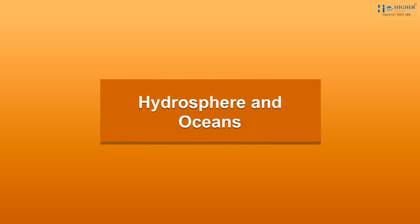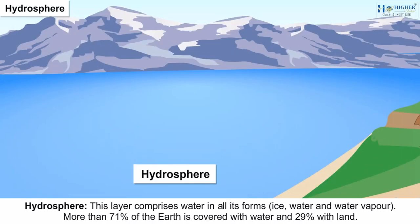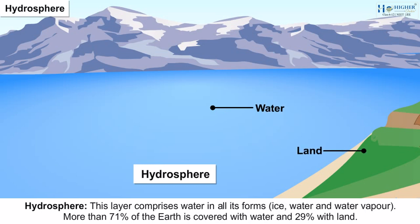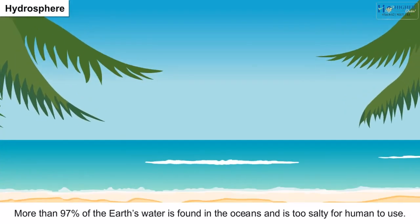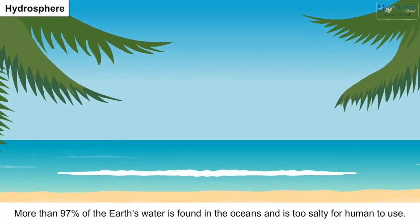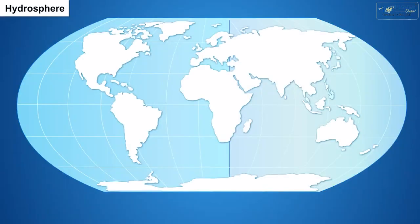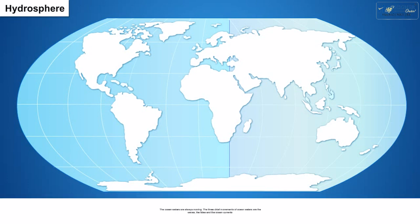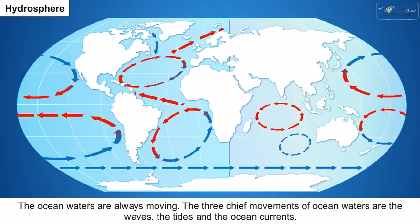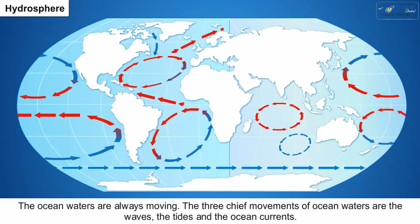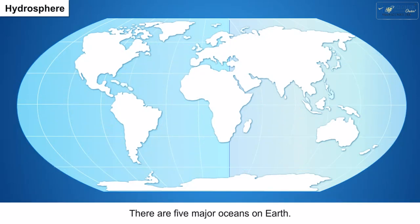Hydrosphere and Oceans. The hydrosphere comprises water in all its forms: ice, water and water vapour. More than 71% of the Earth is covered with water and 29% with land. More than 97% of the Earth's water is found in the oceans and is too salty for human use. Oceans are the major part of the hydrosphere and are all interconnected. The ocean waters are always moving — the three chief movements are waves, tides and ocean currents. There are five major oceans on Earth.